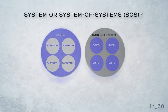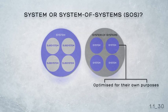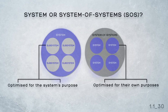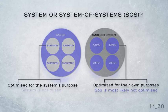The distinction between systems as elements of a system of systems and subsystems as elements of a system is, therefore, that the system of systems comprises systems that have been optimised for their own purposes before joining the system of systems. On the other hand, a system comprises elements — the subsystems — that are not optimised for their own purpose, but have been optimised for the system's purpose. From the higher level perspective, a system of systems is most likely not optimised, because the elements were first optimised for their own purpose before joining that system of systems.